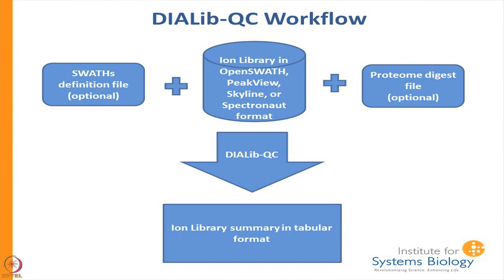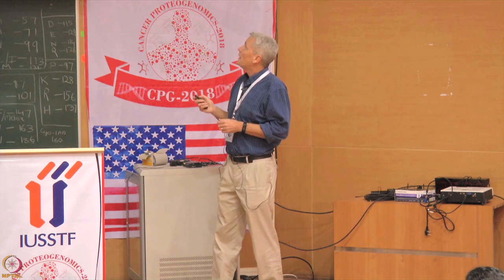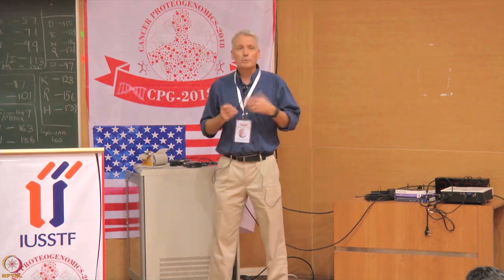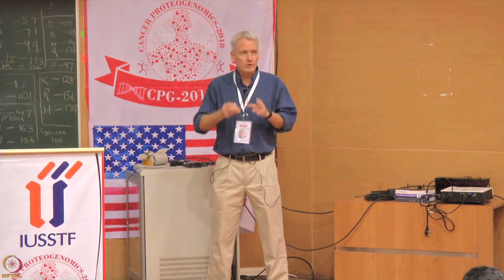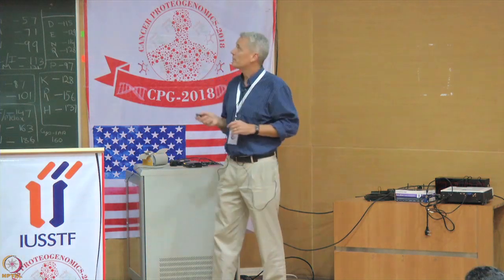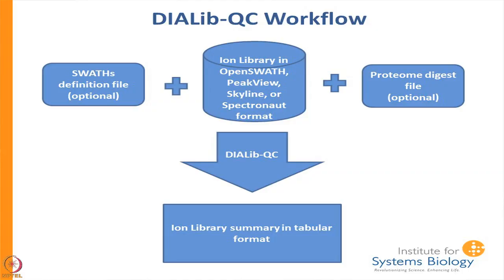This is DIA lab QC. Basically what we have is an ion library in a variety of different formats. We have a SWATH file which specifies the mass range to look from and the width of each bin. You can also compare it to a proteome — basically you take a proteome, digest it, and you have all the tryptic peptides, then run it to get an ion library summary in tabular format.